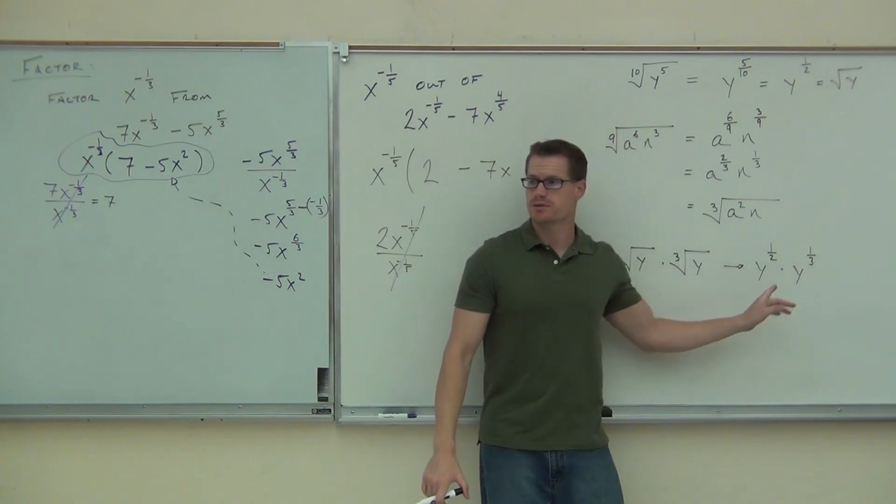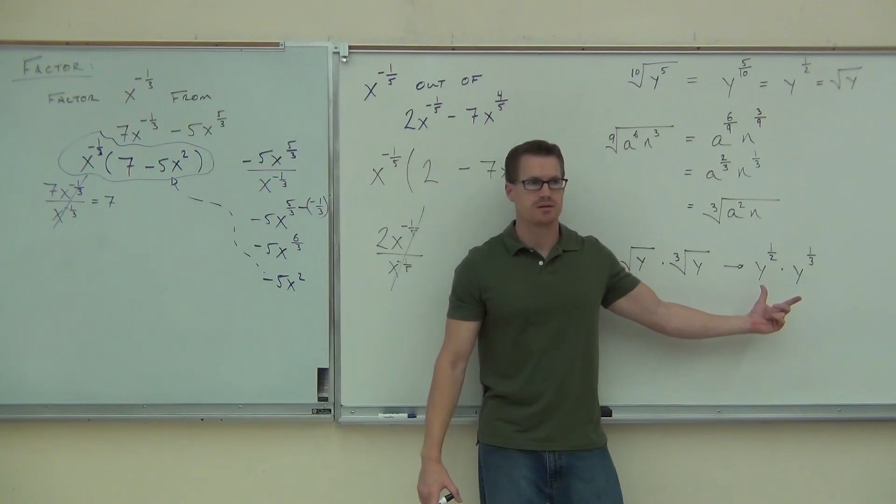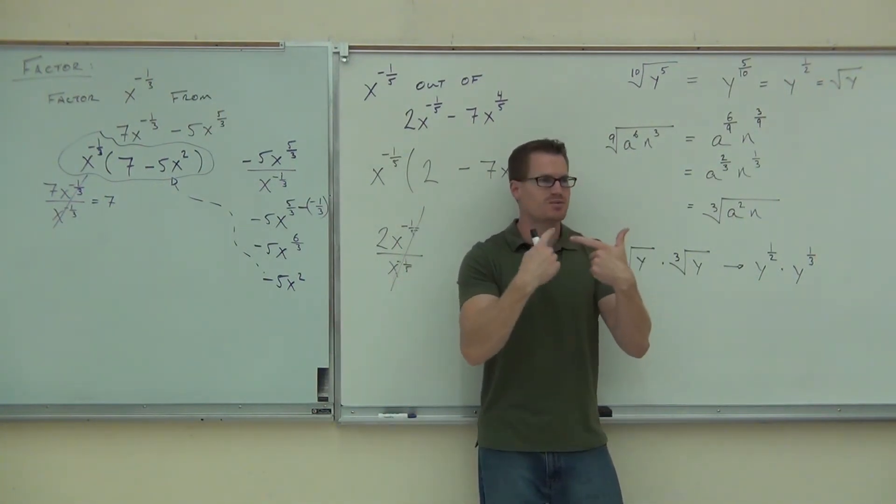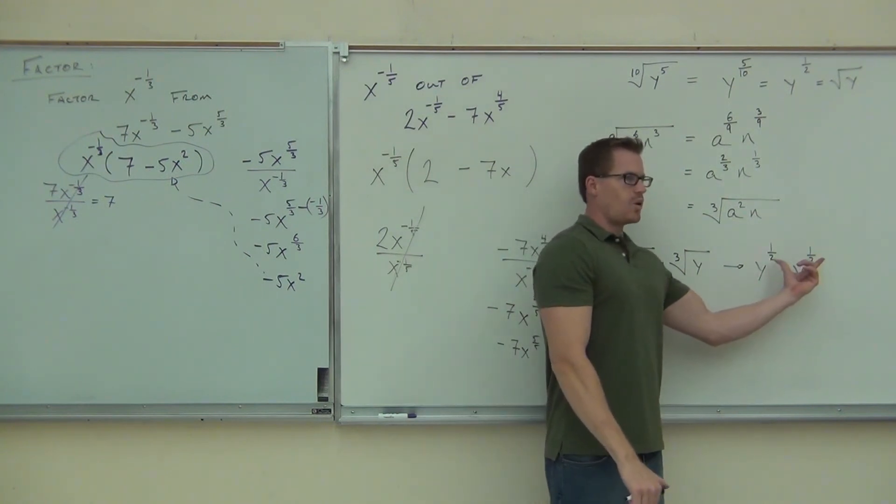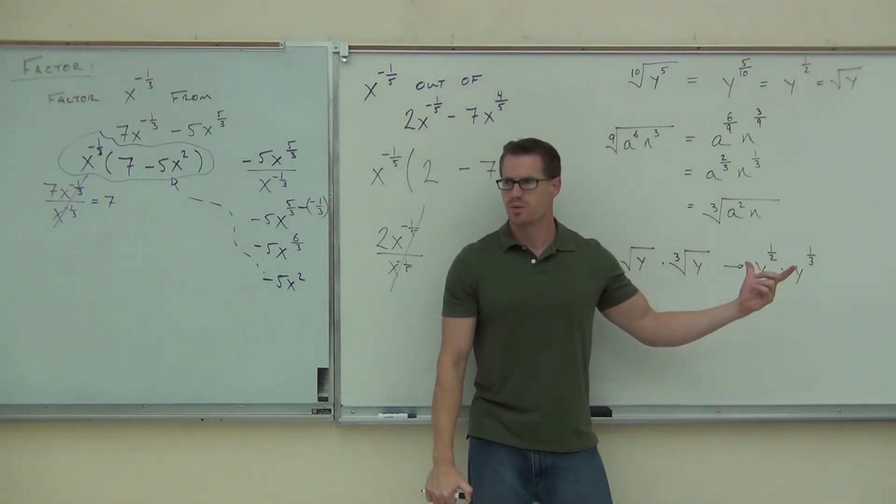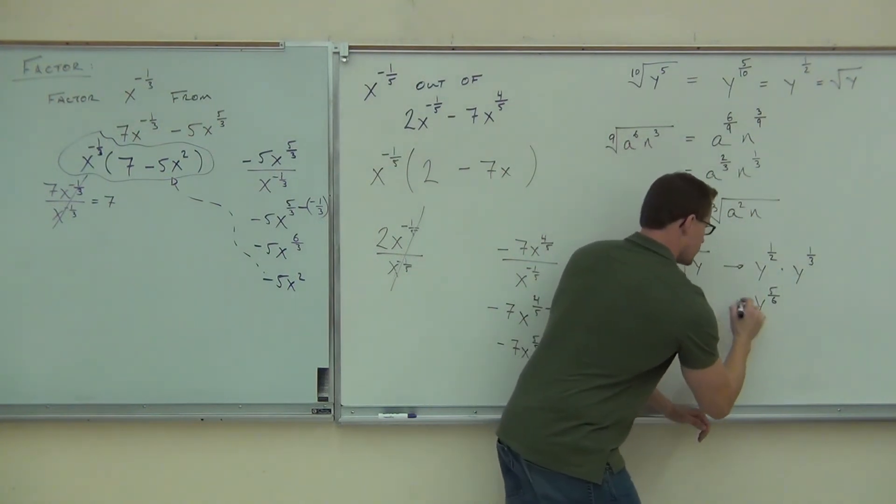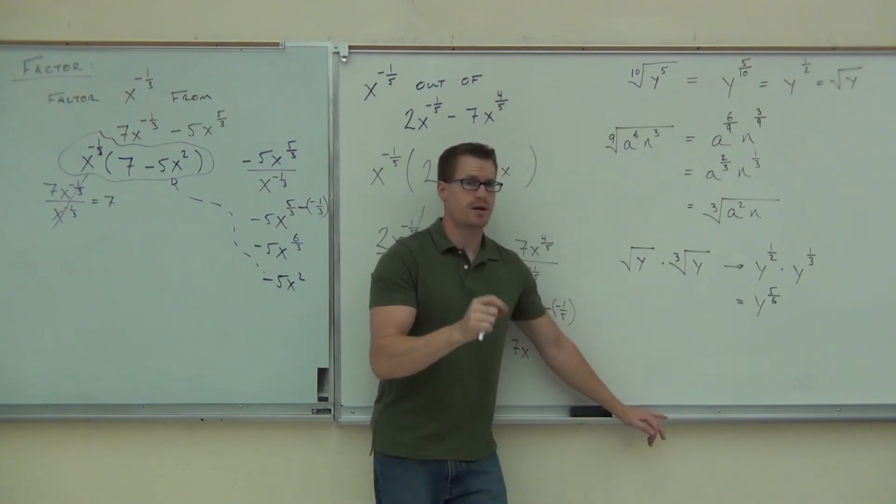We have times y to what power for the next one? One third. Can you combine those? You have a common base, you have exponents. We add them. Just like we did in the previous example, we distributed. You add those exponents. So if we add these together, what's one half plus one third? Can you do one half plus one third? Find a common denominator. Five sixths. Y to the five sixths.